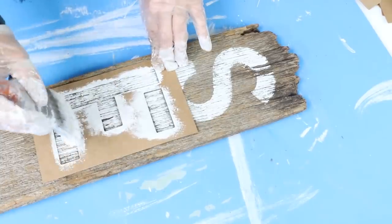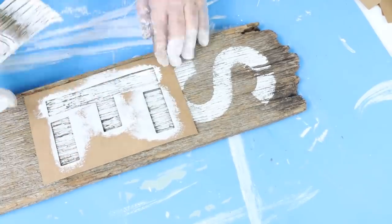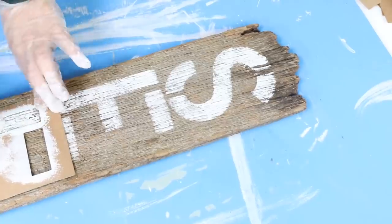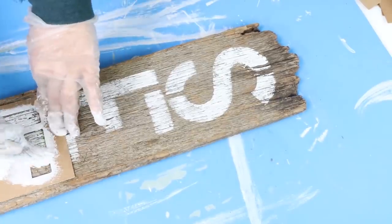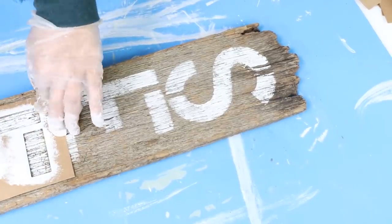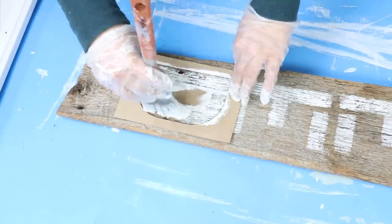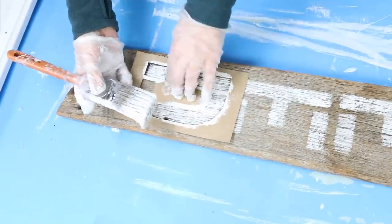I thought that looked really farmhouse and cute, and I really didn't even cut the board. It's jagged, it looks great the way it is. So I'm just going to lay the letters out on my board, and then I will paint them with Waverly white chalk paint.